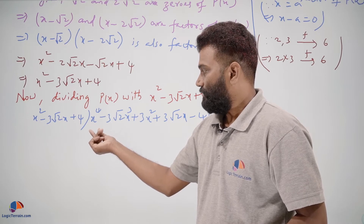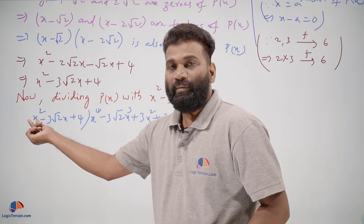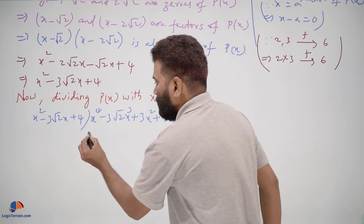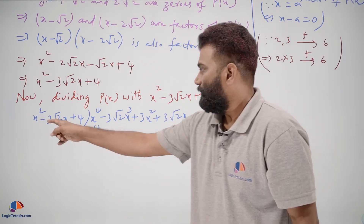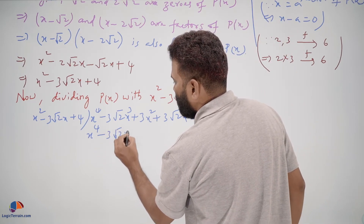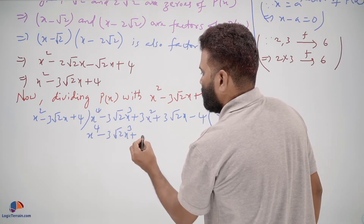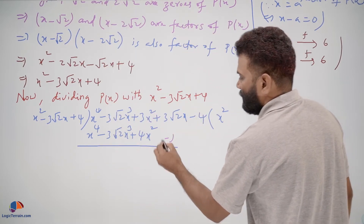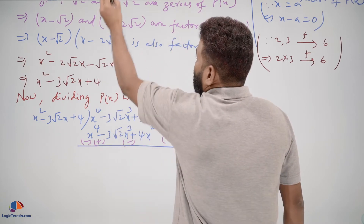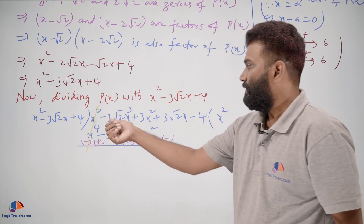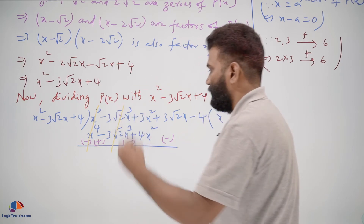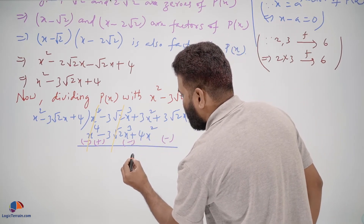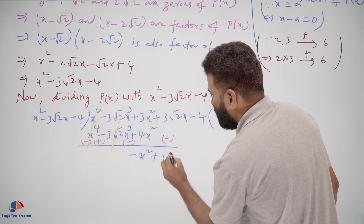The first term x to the power of 4 is there, so we multiply x squared by x squared to get x to the power of 4. Multiplying x squared by the entire divisor: x squared times x squared gives x to the power of 4, minus 3 square root 2 x times x squared gives minus 3 square root 2 x cubed, plus 4 times x squared gives 4 x squared. After subtracting, x to the power of 4 cancels, minus 3 square root 2 x cubed cancels, and we are left with plus 3 x squared minus 4 x squared, giving minus x squared plus 3 square root 2 x minus 4.